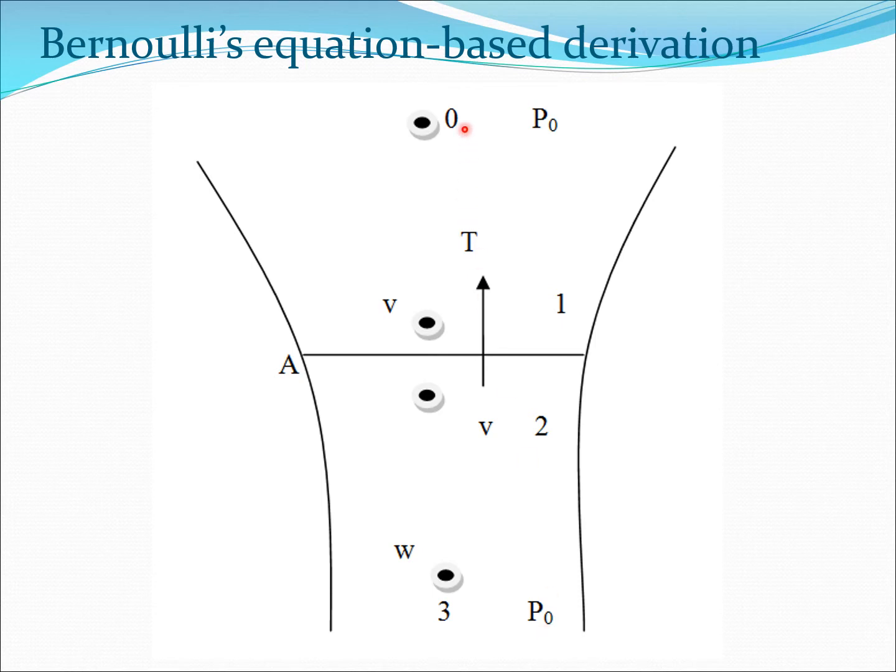We cannot apply Bernoulli's equation between 0 and 3, for example, because at the rotor disk energy is being put into the system, and Bernoulli's equation essentially would then not be valid if we cross the rotor disk.